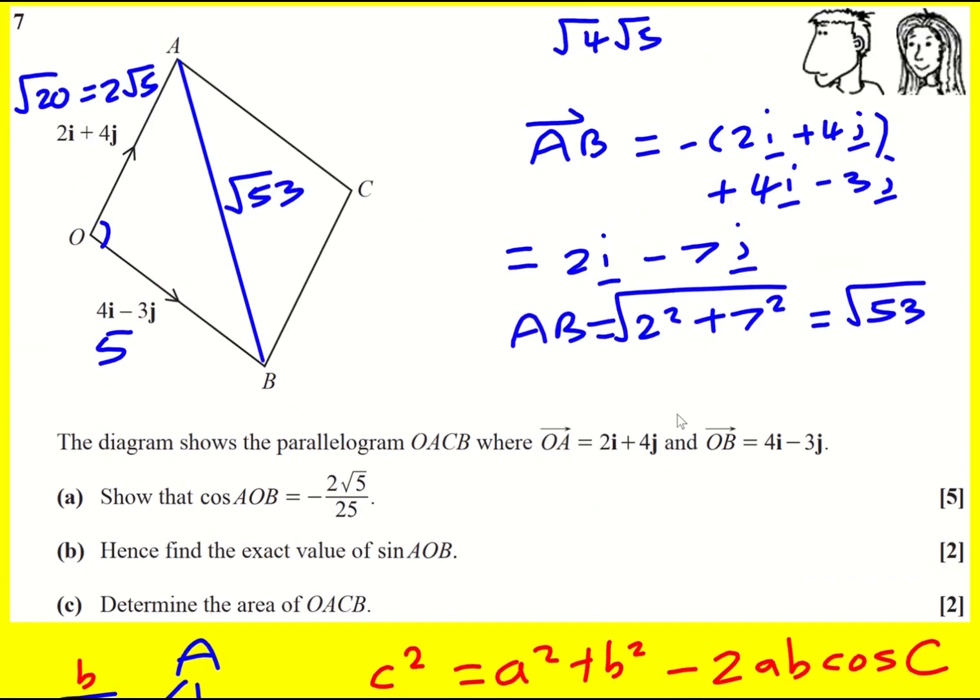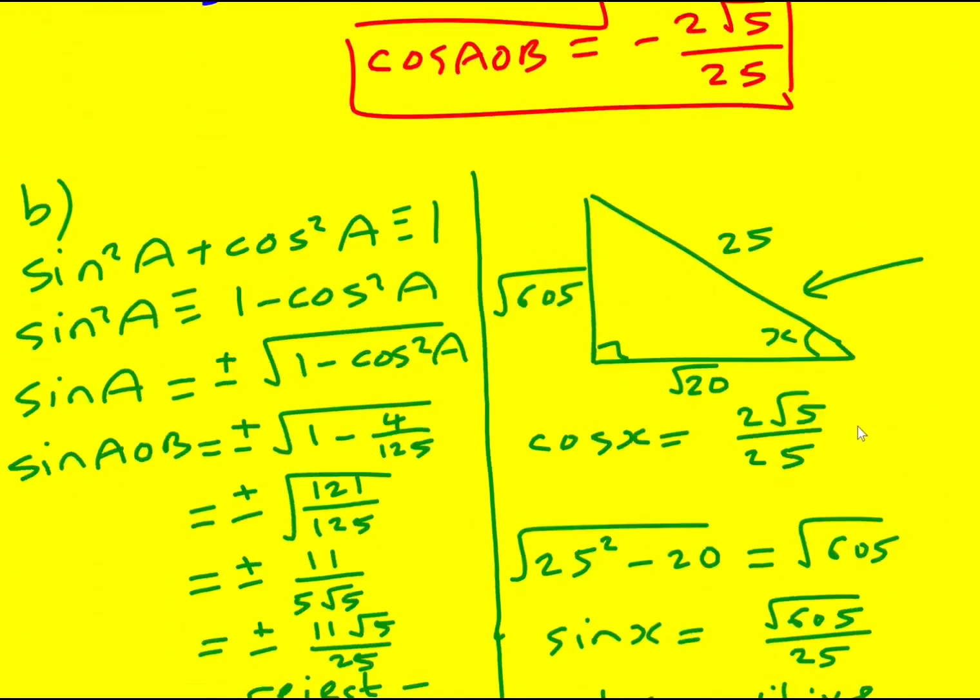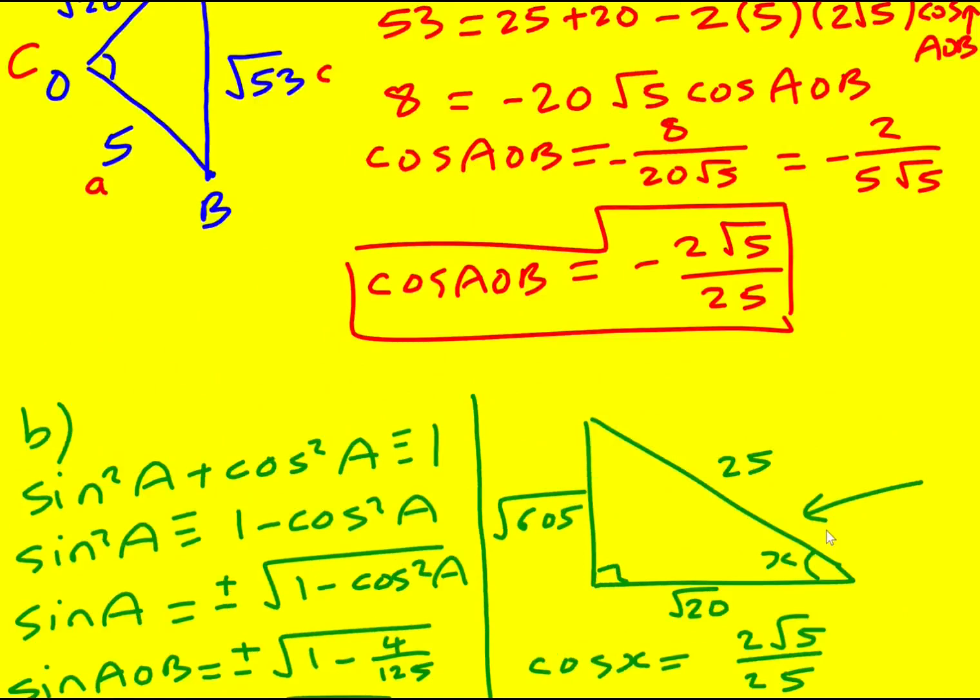Finally, determine the area of OACB. We've actually done all the hard work here. OACB is the whole parallelogram. So the parallelogram is going to have the two triangles with the same area, because these are congruent triangles. So the area is going to be two times the area of the triangle, which is a half AB sine C. So it's going to be a half times five times two root five, those are my sides, times my sine C, the angle in between, which from above is going to be that 11 root five over 25.